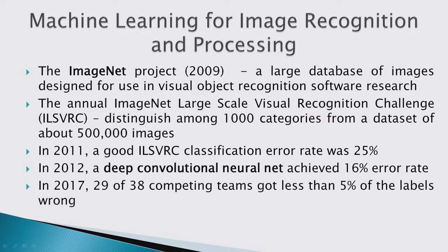Since then, everybody started using convolutional neural networks. In 2017, the majority of competing teams — 29 out of 38 — got less than 5% of labels wrong. Right now they're getting pretty much almost every image right, and accuracy is actually exceeding human accuracy in some cases.